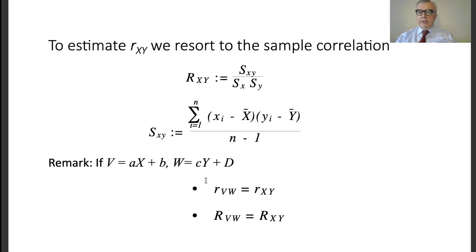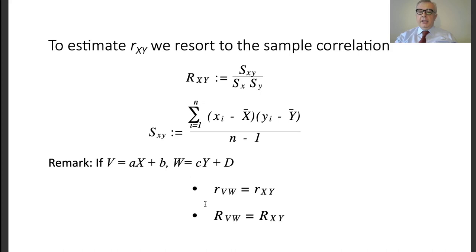This is a useful property because it means the correlation coefficient is invariant with respect to changes in measurement units. Even if you change from Celsius to Fahrenheit — which is an affine transformation — the correlation coefficient does not change. The same property translates to the sample correlation: the sample correlation between V and W equals the sample correlation between X and Y.